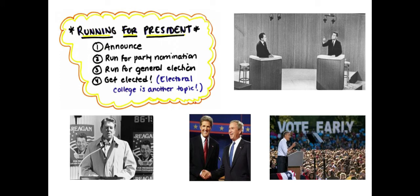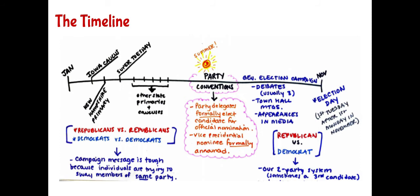We'll tackle the Electoral College with some other resources. I typically draw this timeline on the board to help students understand the timeline of the election year. Keep in mind that the campaign typically starts way before the actual election year. Though we're starting with January 2020, this could apply to any year. The official election year begins in January with primary and caucus contests. Iowa and New Hampshire held two of the first contests to narrow down each party's candidate. This part of the phase is known as the primary phase.